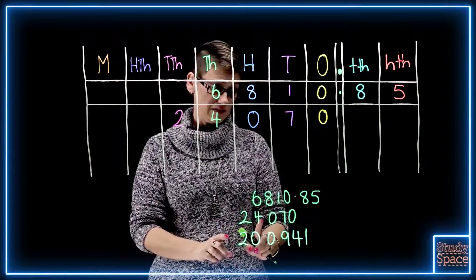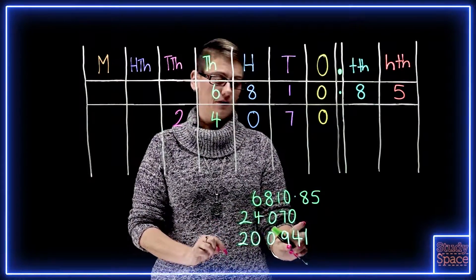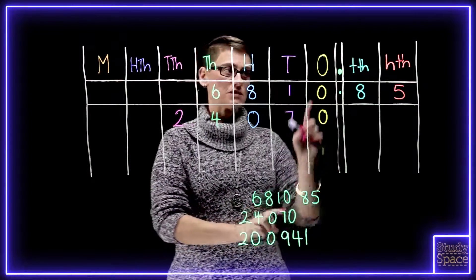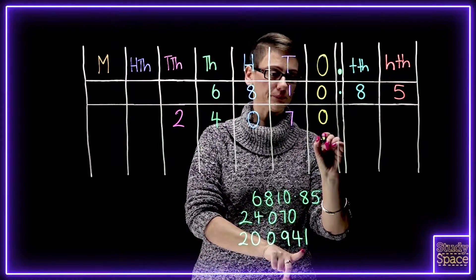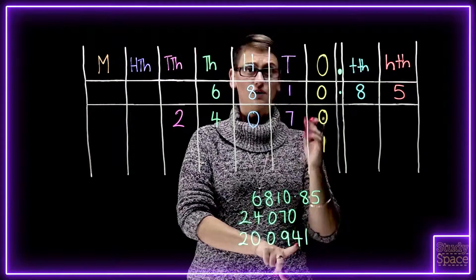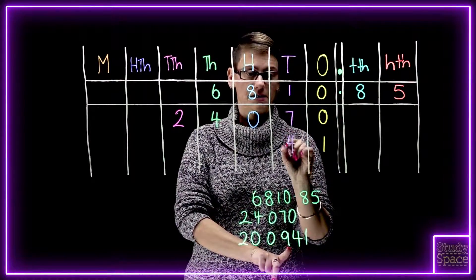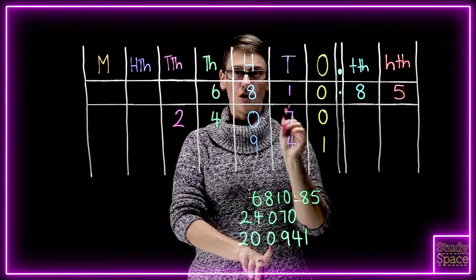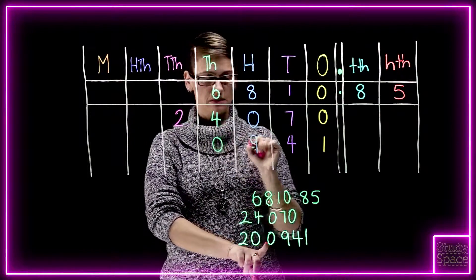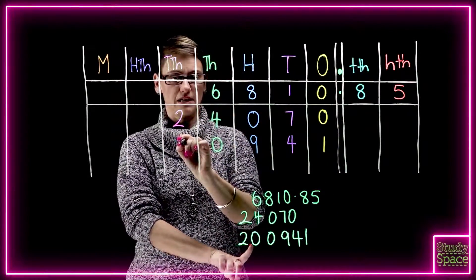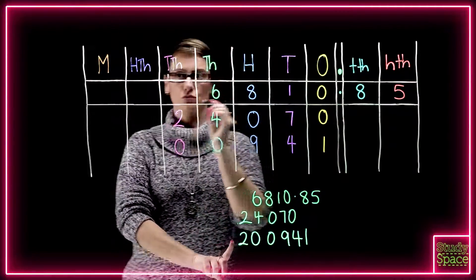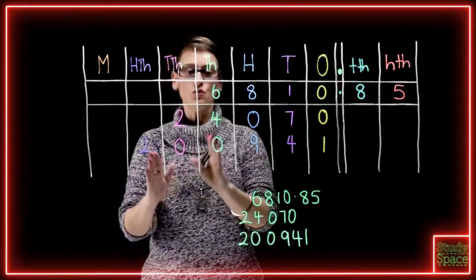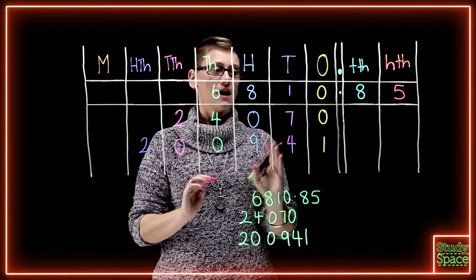Let's have a look at the last one in this group: two hundred thousand, nine hundred and forty-one. Again, a whole number, no decimal places. Starting from the ones column, we've got a one. The four, which is worth forty in the tens column. Nine hundred in the hundreds column. We've got no thousands, but we need to hold the place — zero. No tens of thousands, but we need to hold the place — zero. Then we've got the two in the hundreds of thousands column. Our number is two hundred thousand, nine hundred and forty-one.